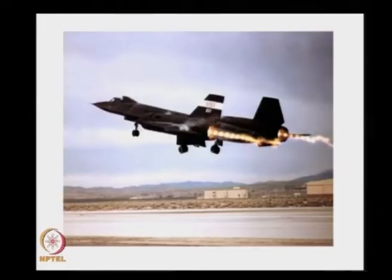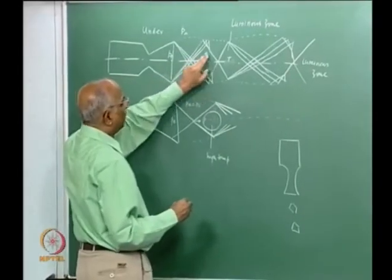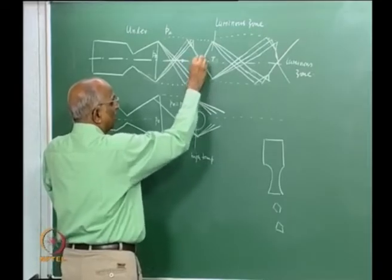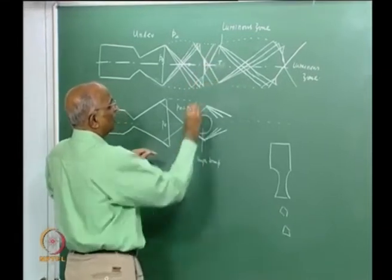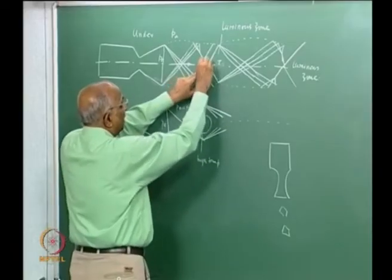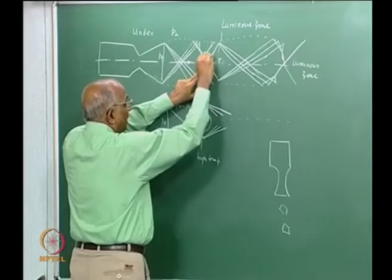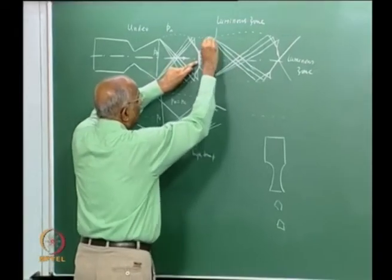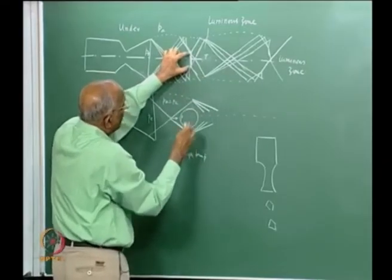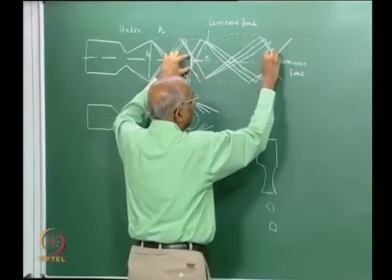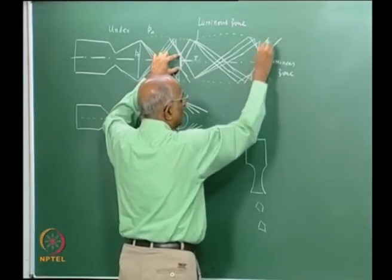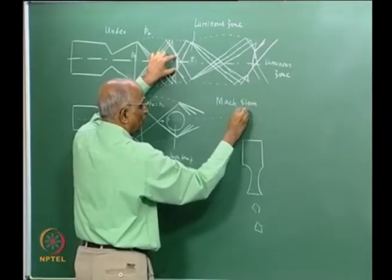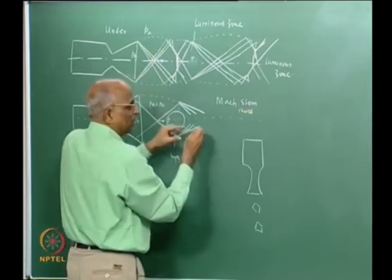But in practice there is another problem. Whenever oblique shocks interact, you very often get something like a Mach shock. A stem shock is formed — instead of having a regular reflection, I have a Mach reflection and therefore a shock is formed. This shock wave is known as a Mach shock. That means I have an incident shock, a reflected shock, and a strong normal shock. The shock pattern continually changes and you have a shock structure forming. This simplified picture gets a little complicated because of the Mach stem shock.